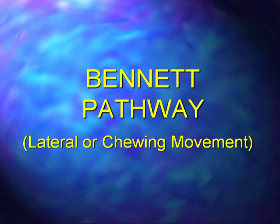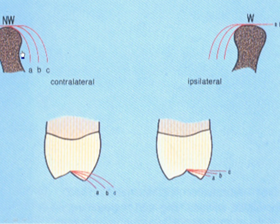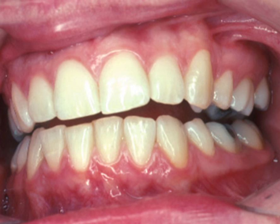Bennett pathway deals with lateral or chewing movement. If you have a little bit of Bennett — which is an inward movement of the condyle — versus a lot of Bennett, pathway C again affects the approach of the opposing teeth. But again, they left a portion out of the equation: the canine guidance. In other words, if this is an interference on one of your crowns, would you want to adjust that crown or maybe add back a little bit to the canine to get a little more guidance to clear that interference?